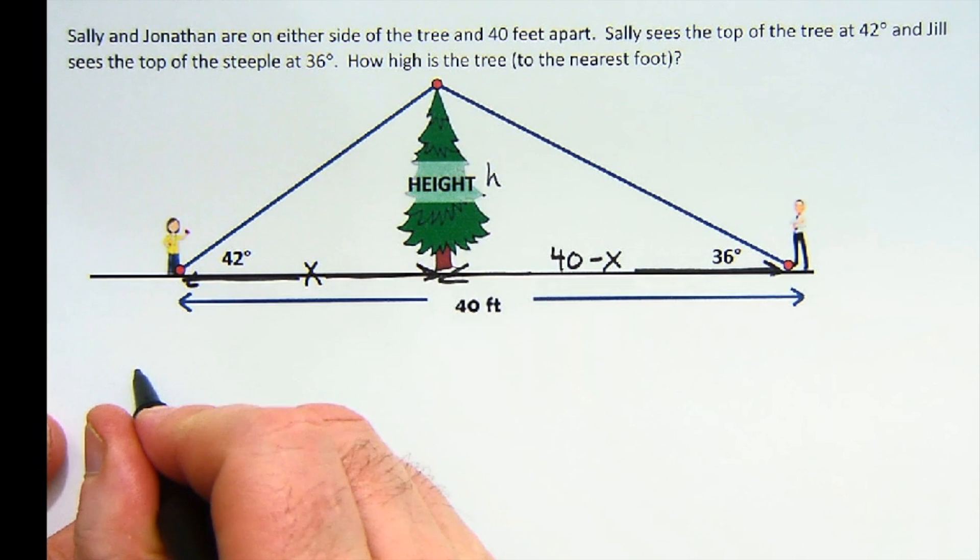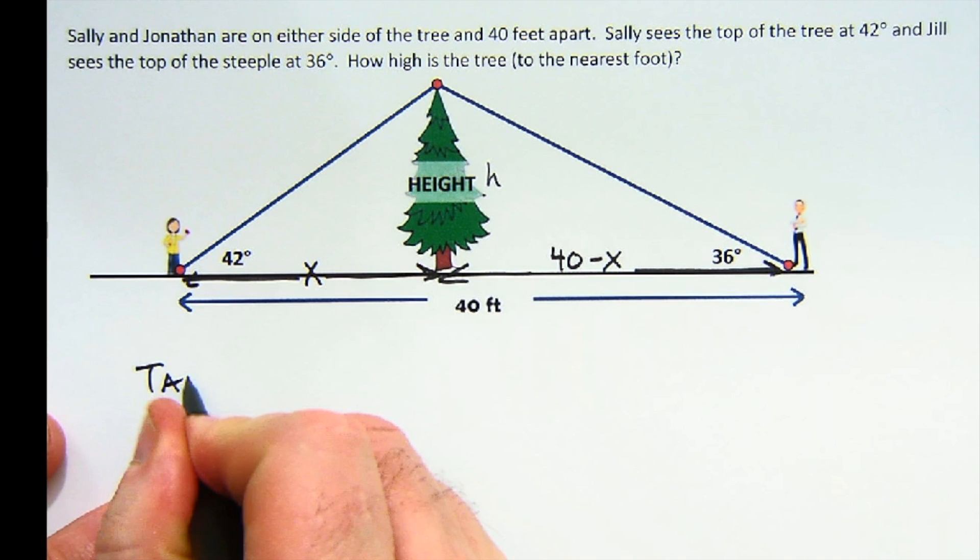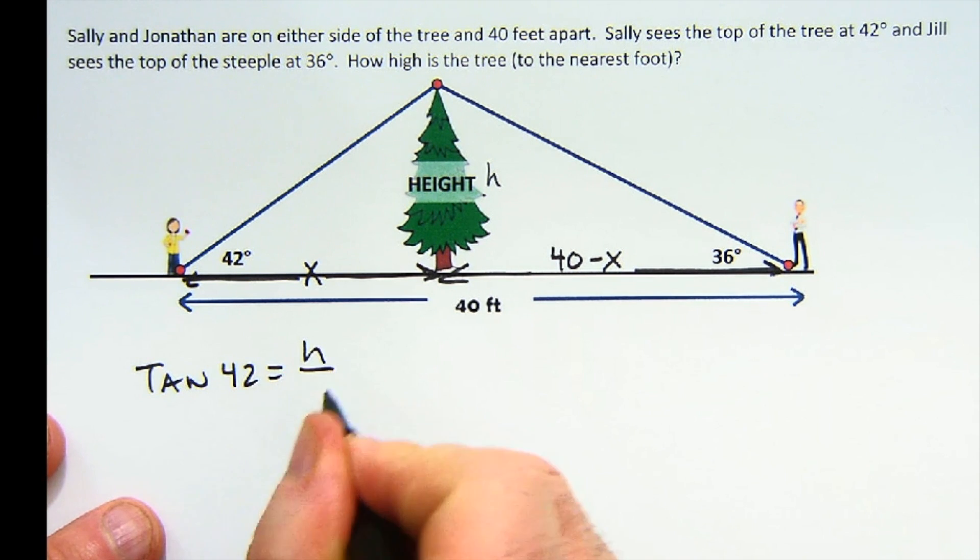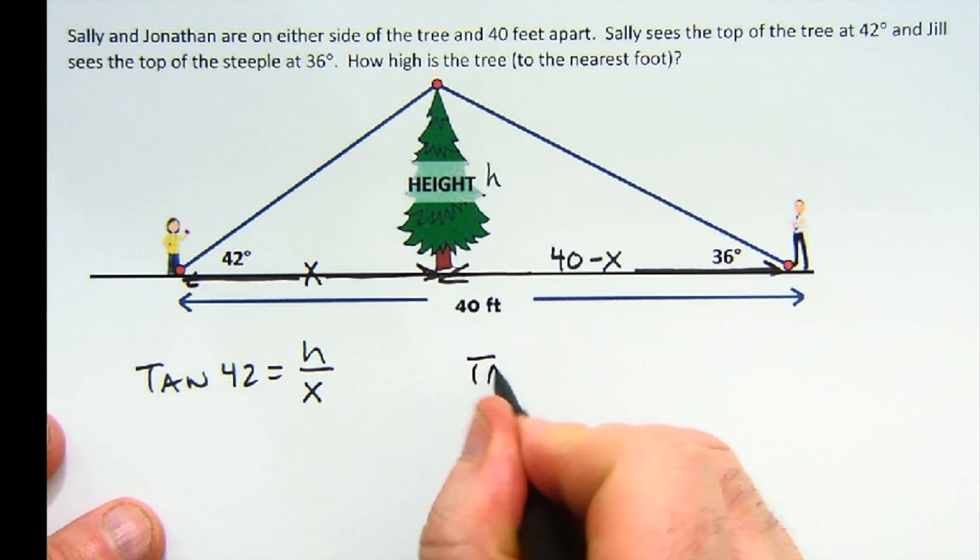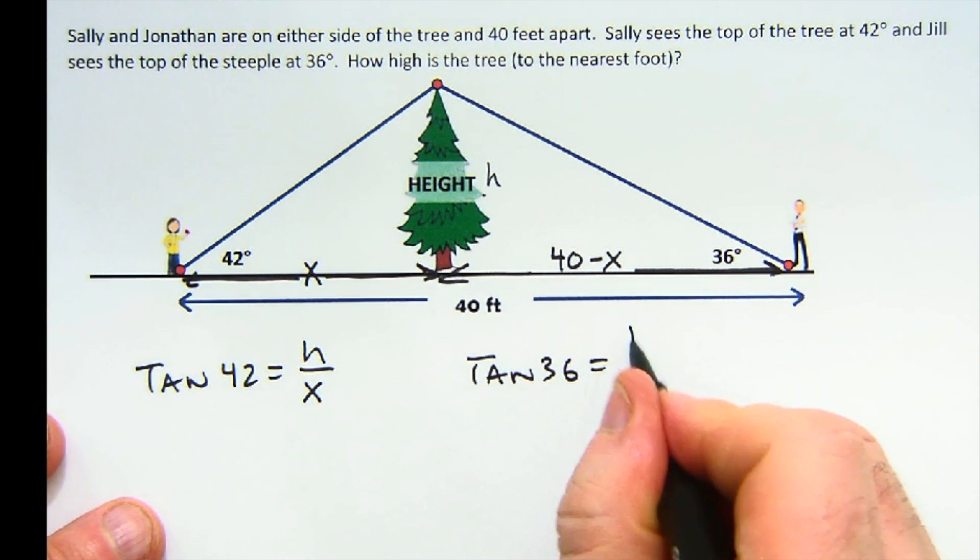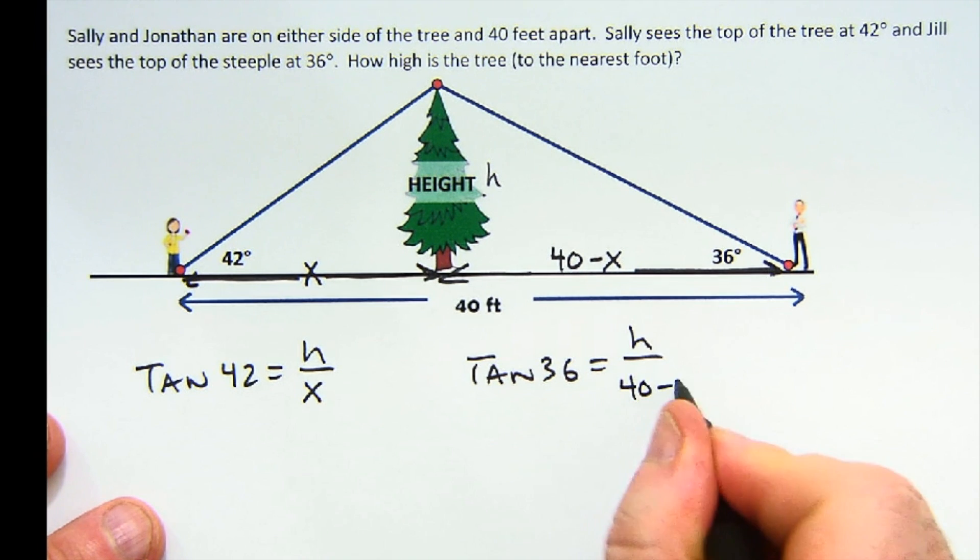So tangent of 42 is h over x, and then over here, tangent of 36 is h over 40 minus x.